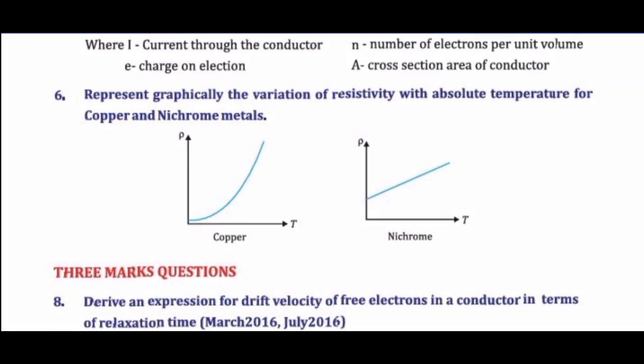Question 7: Represent graphically the variation of resistivity with absolute temperature for copper and nichrome. Answer: A graph showing resistivity (rho) on the y-axis and absolute temperature T on the x-axis.